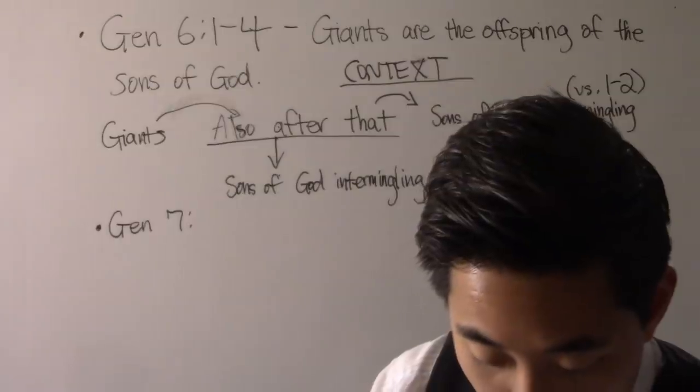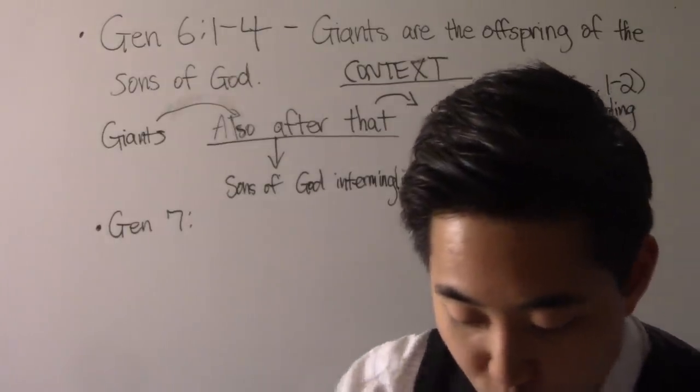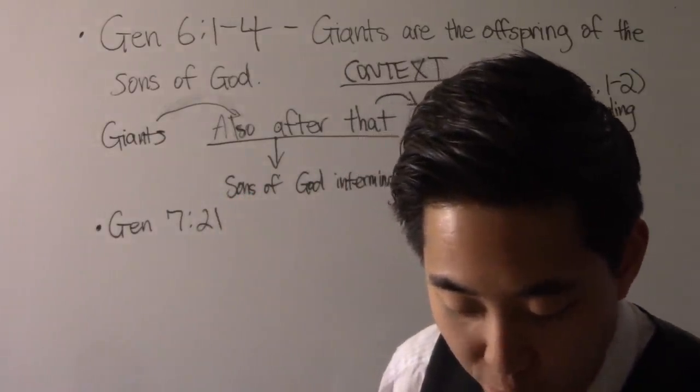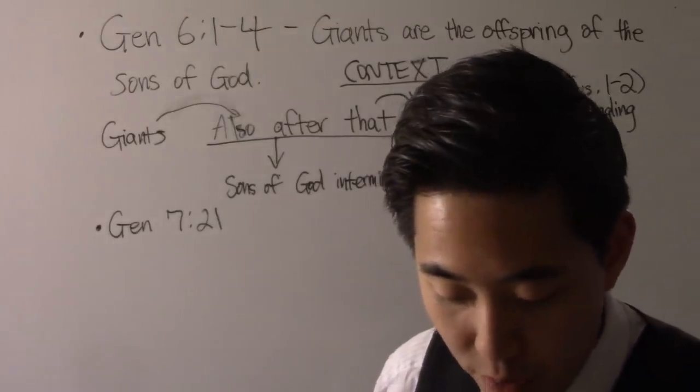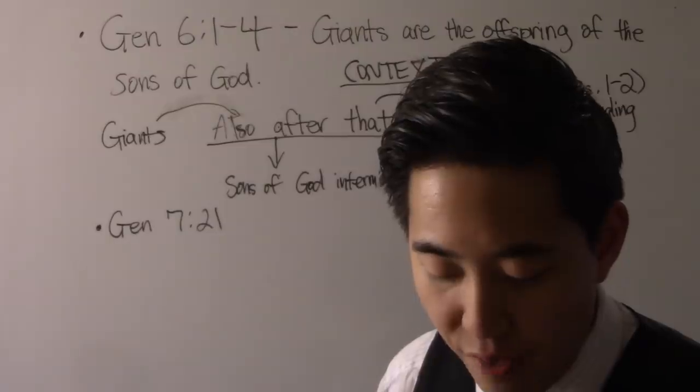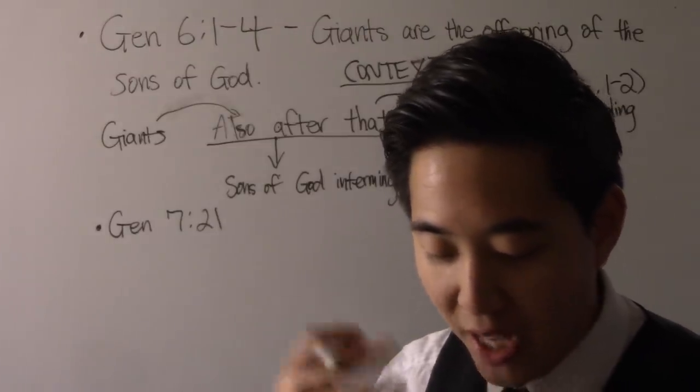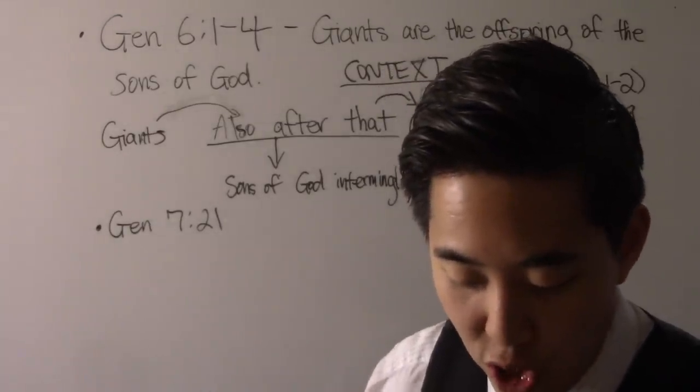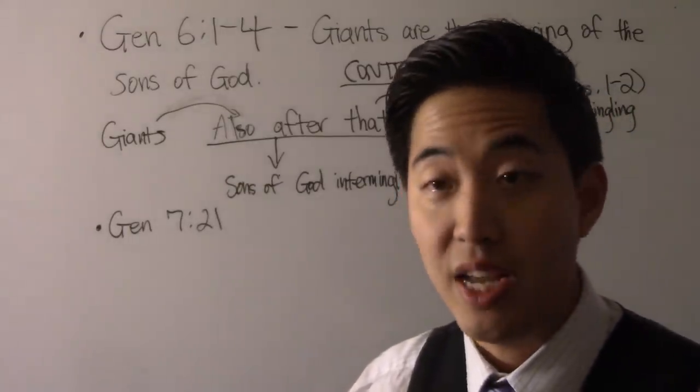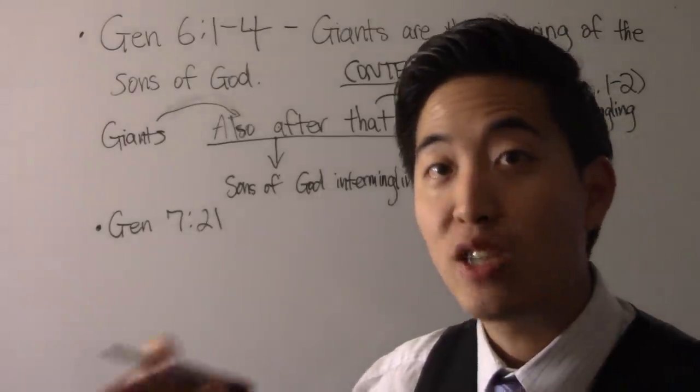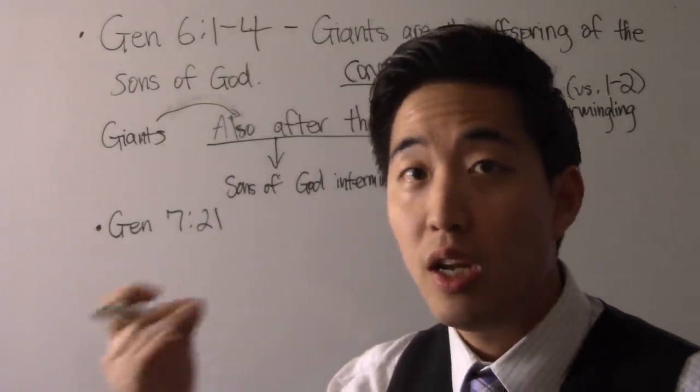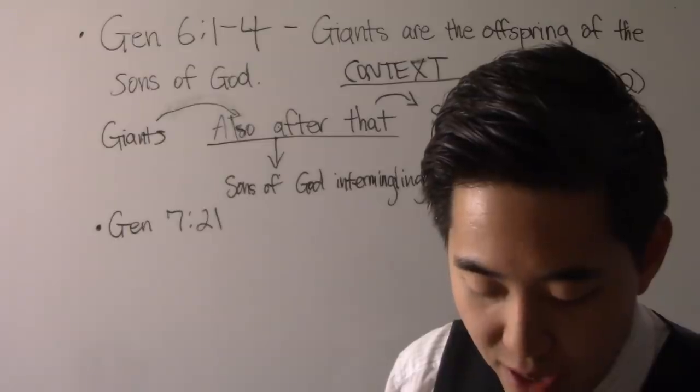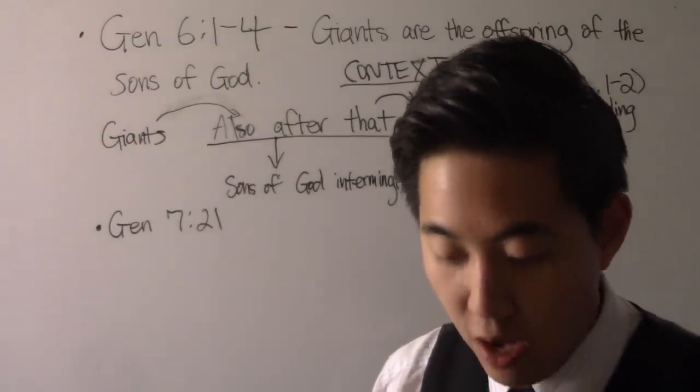Let's see how Genesis 7 describes God destroying all flesh. He doesn't mention fishes, but he mentions birds, creeping things, animals, and humans. Genesis 7:21, and all flesh died that moved upon the earth, both of fowl, and of cattle, and of beast, and of every creeping thing that creepeth upon the earth, and every man. No fish. All in whose nostrils was the breath of life of all that was in the dry land died. That makes sense. Fish don't breathe in air. And every living substance was destroyed which was upon the face of the ground. We're talking about the earth. Fishes are not mentioned.